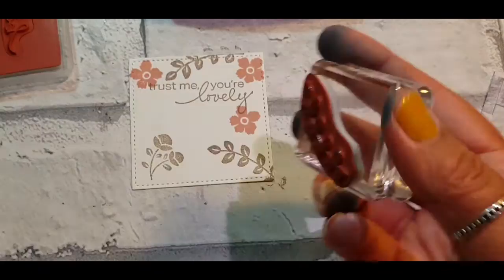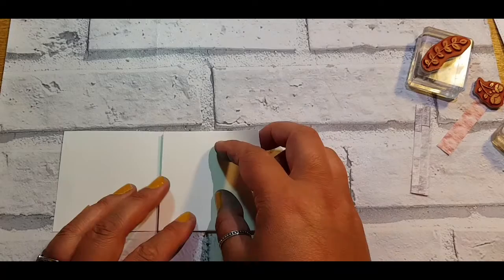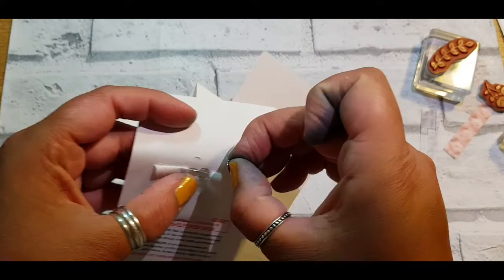Going in with the Lovely You stamp set to decorate this square. So sticking with my color palette of Blushing Bride and Grey Granite.